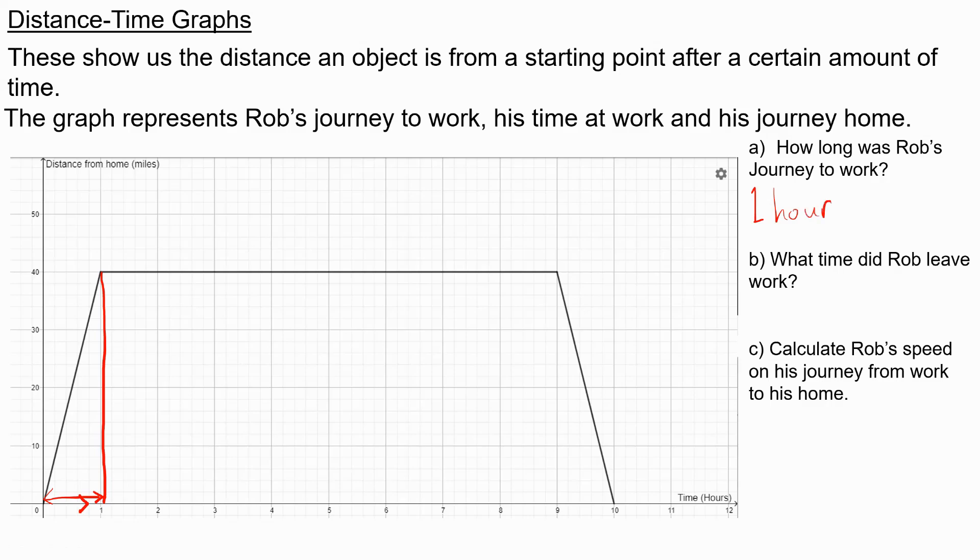What time did Rob leave work? Well, if we look at the graph, we can see there's a period of time here from one hour all the way across to nine hours, where Rob's distance does not change from home. So this must mean that he's at the same location, which is his work. So we can say that he leaves work when this section finishes, which is after nine hours.